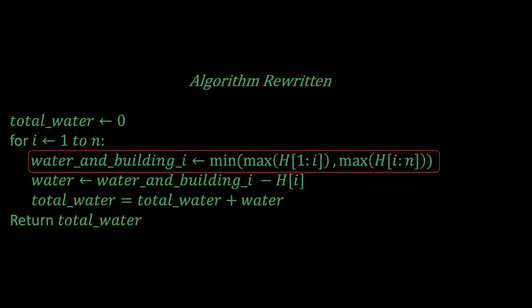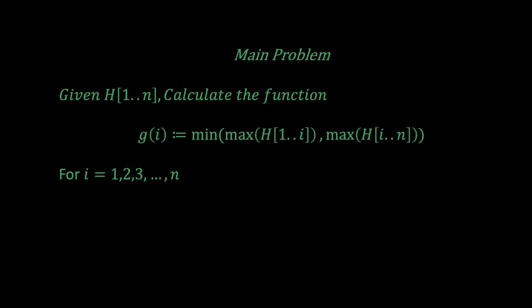So if you think long enough, you would find that the main hurdle for solving this problem is essentially this. Given an elevation map H, how do we calculate the function g(i) which is equal to the minimum of two maximums, the left maximum of H[1:i] and the right maximum H[i:n] for i equals 1, 2, 3, all the way to n.